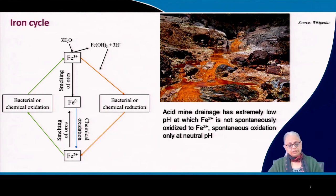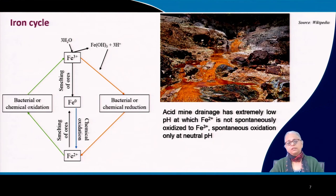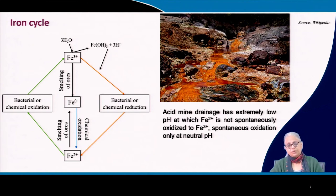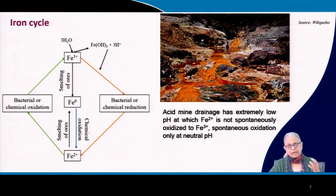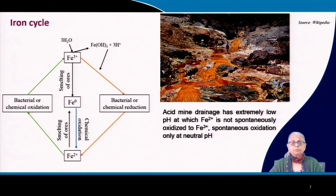Let us take a look at something very interesting. We all know that in the normal environment, iron in dissolved form will spontaneously get oxidized from Fe2+ to Fe3+, and Fe3+ is highly insoluble — it precipitates. You get these black precipitates, and that is what we call rust. If you have anything that contains iron, like steel or any alloy of iron, you get this rust and precipitation of ferric iron.